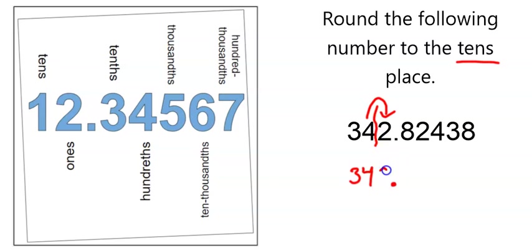So to show that they are not important, I simply use a 0 to fill in that spot, so that my number rounded to the tens place would be 340.